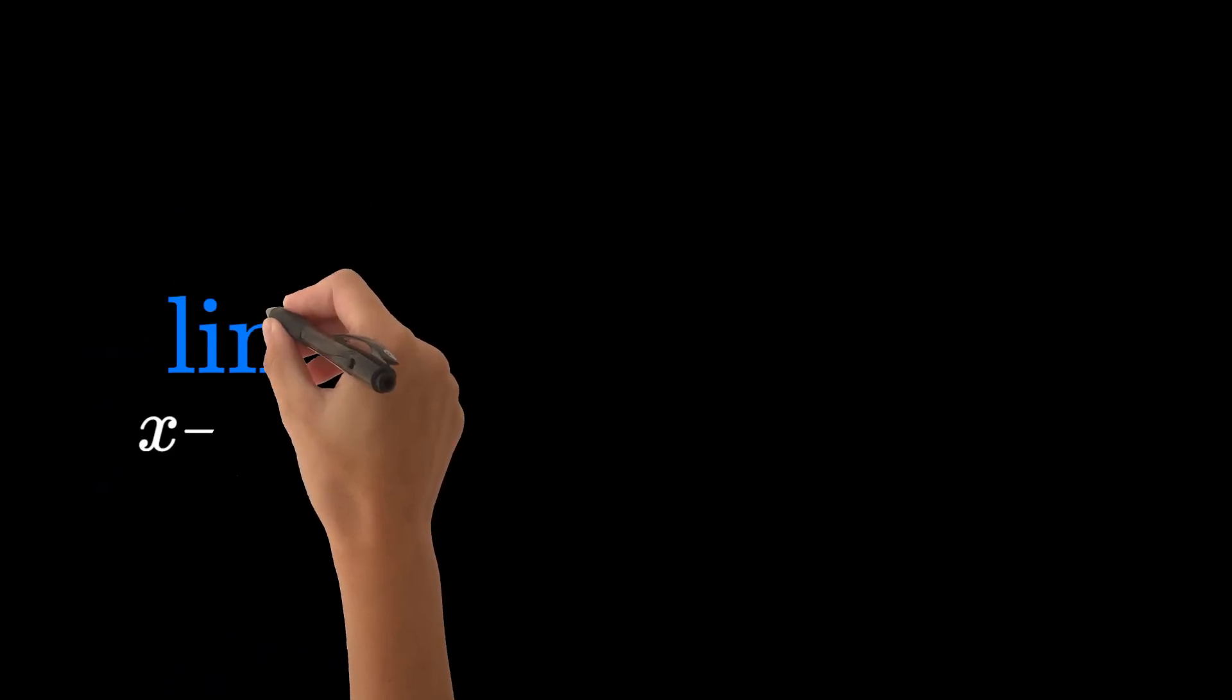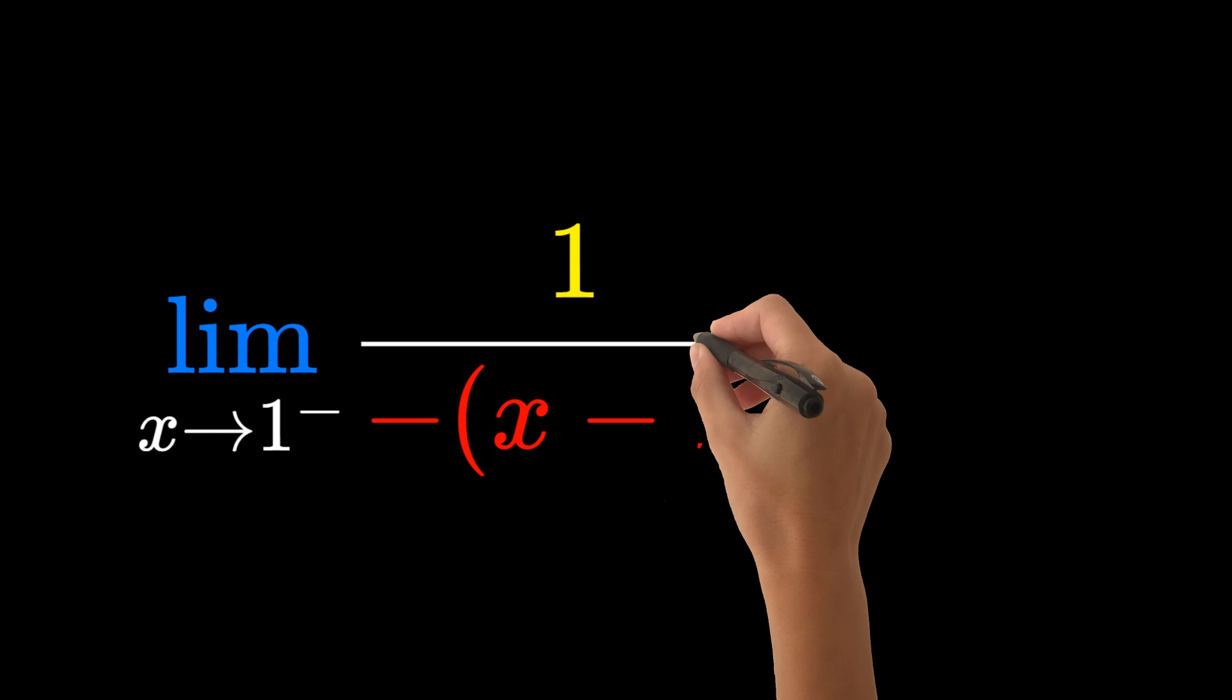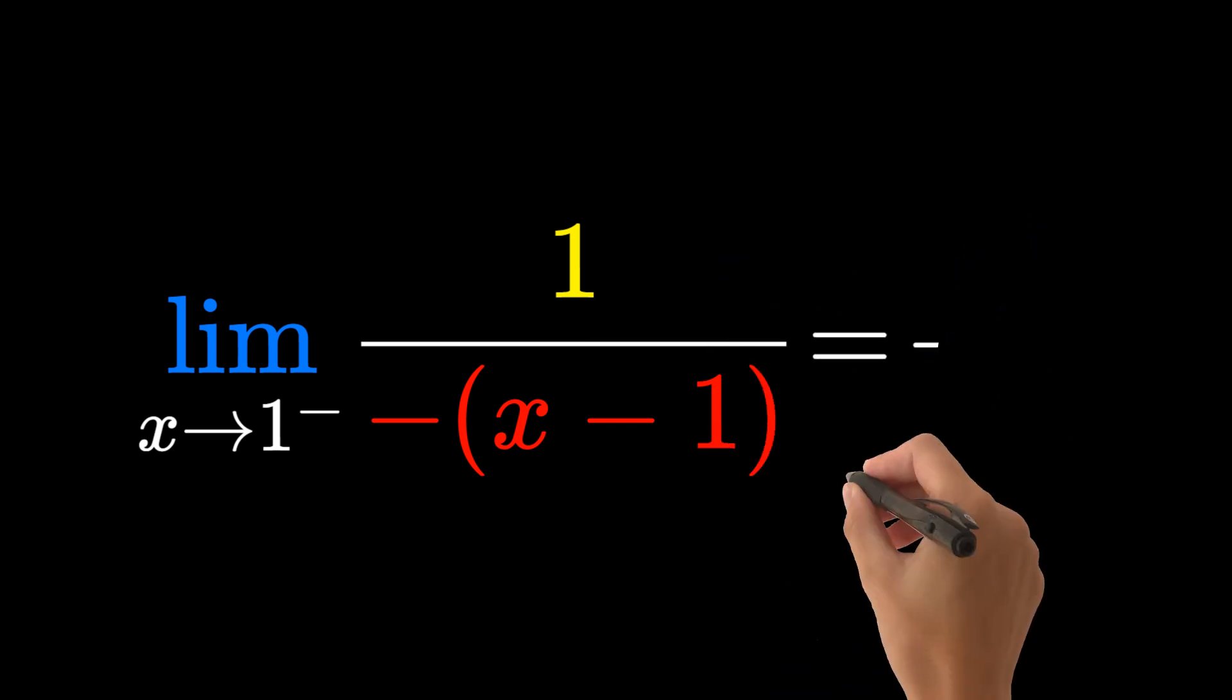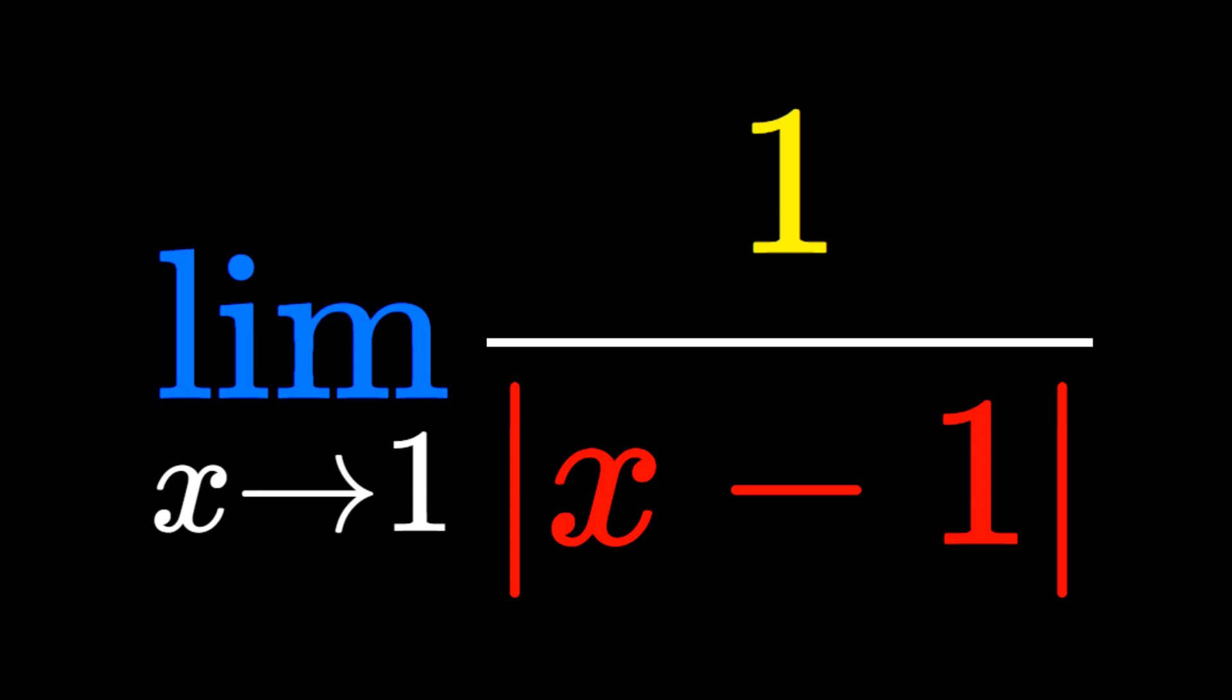We could repeat the previous calculation, but the pattern holds, so the limit as x approaches 1 from the left of 1/-(x - 1) is positive infinity. Both limits are positive infinity, so the overall limit is infinity, which is like saying the limit does not exist.